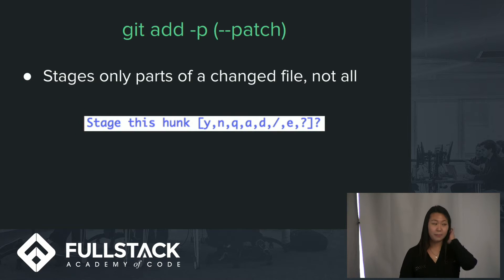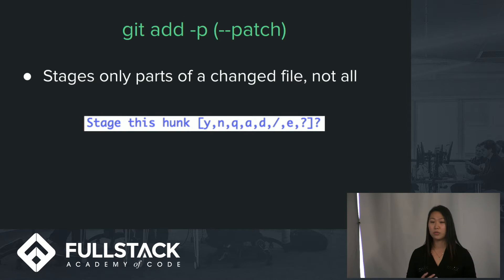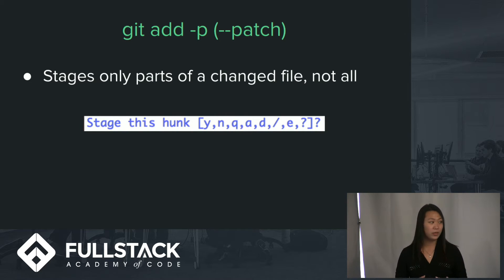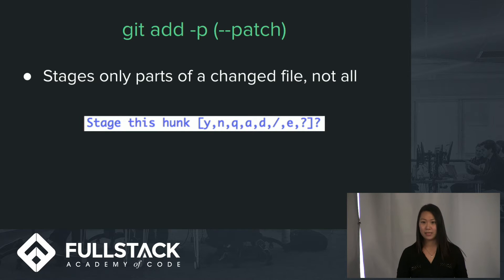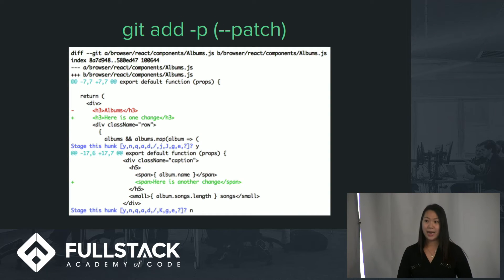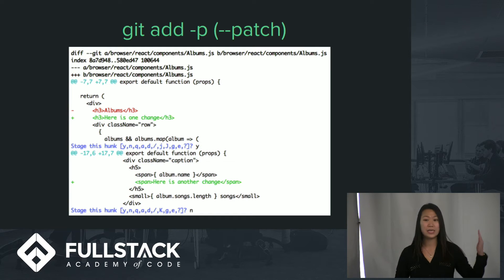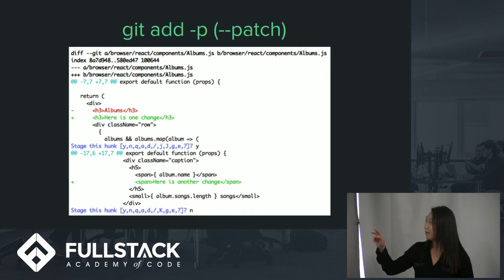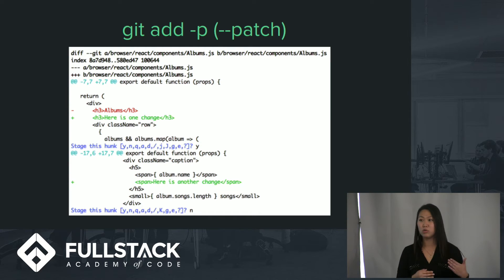`git add -p` stands for dash-patch. It brings you into an interactive mode that goes through all of your changed files and allows you to selectively add the ones you want. It brings up this text staged as hunk. What I think is even cooler is that you can add parts of just one changed file. For example, here I made changes to albums.js in the top and the bottom — you can stage the top hunk with Y for yes, but not the bottom with N for no, choosing which parts you actually want to add instead of adding the whole file at once.